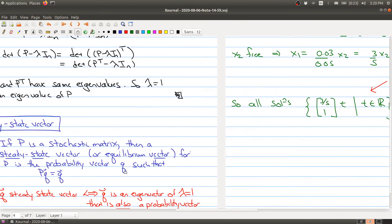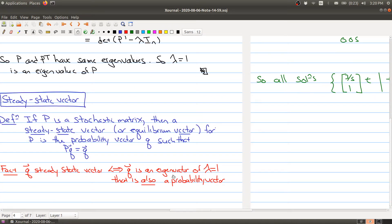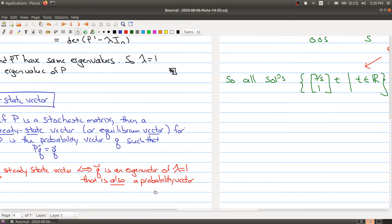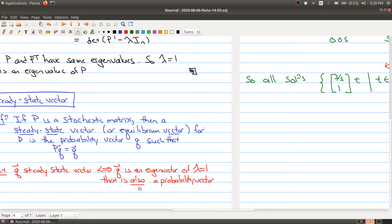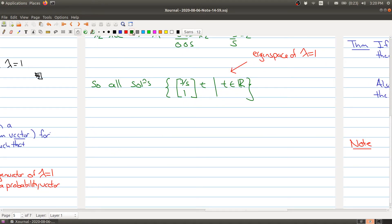And now what we're interested in is the steady state vector. So we're looking for an eigenvector. So that means it has to be in this set because it contains all the eigenvectors of lambda equals one. That's also a probability vector. So let me write that down.